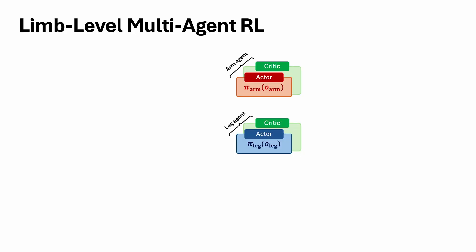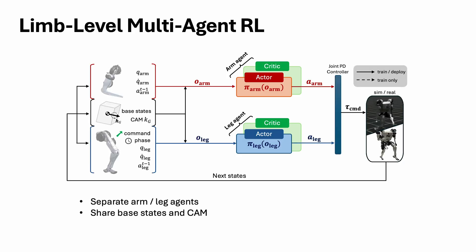Our approach consists of two actor-critic structures, one for the arms and one for the legs. Actors of each agent observe their own limb-specific states while sharing base states and centroidal angular momentum. During training, critics of each agent receive global information, following centralized training and decentralized execution paradigms.